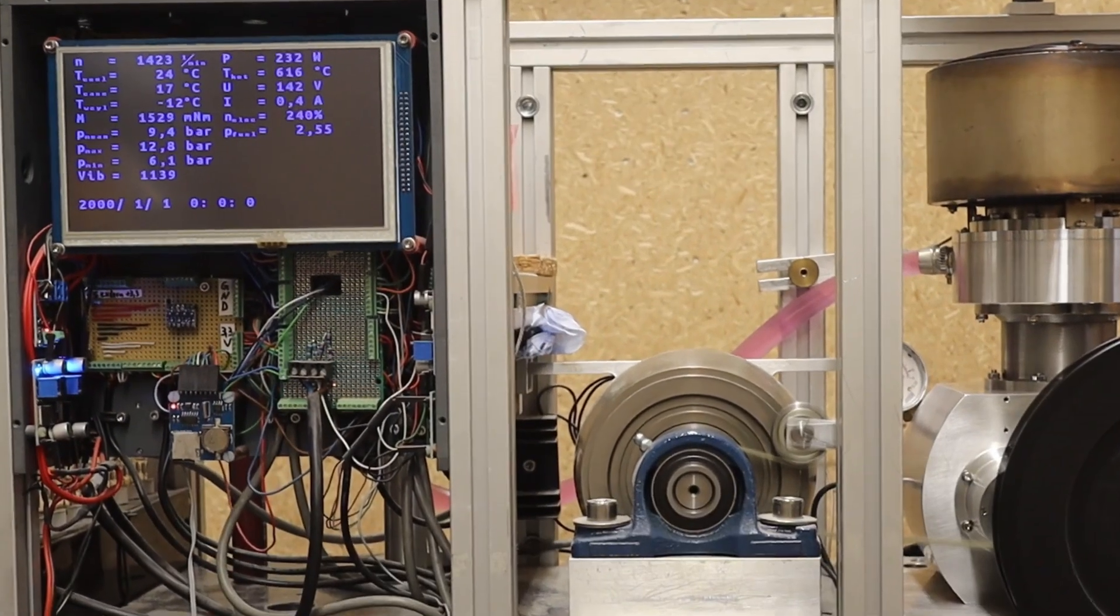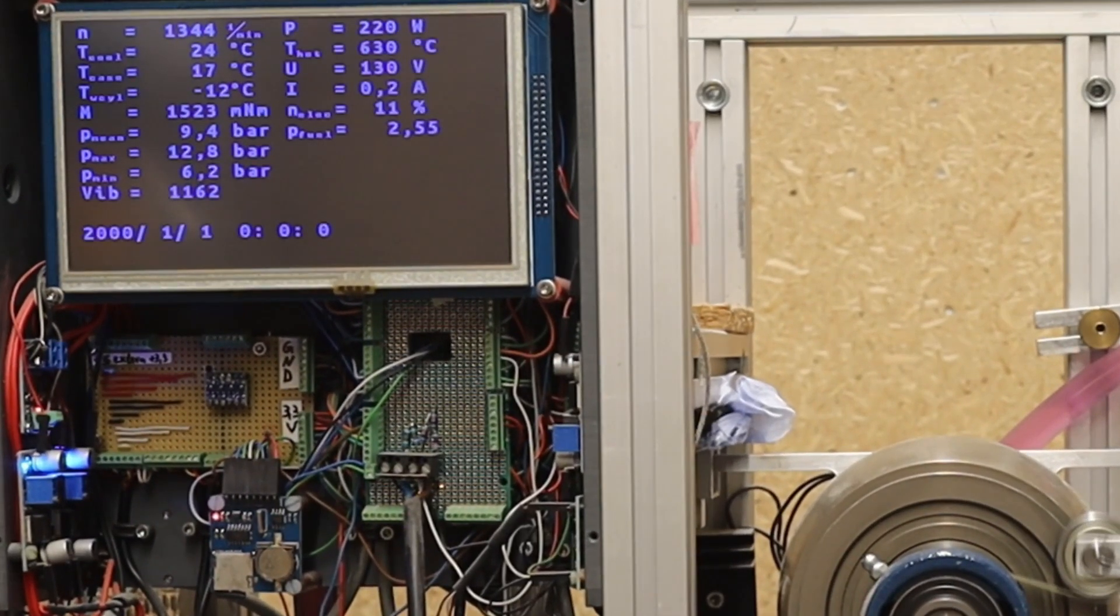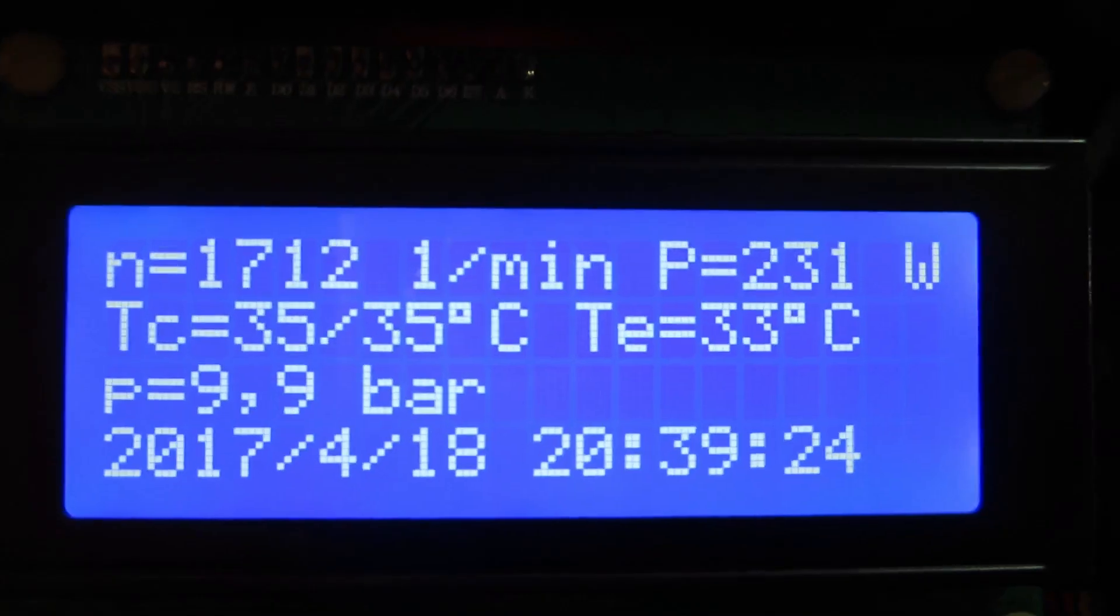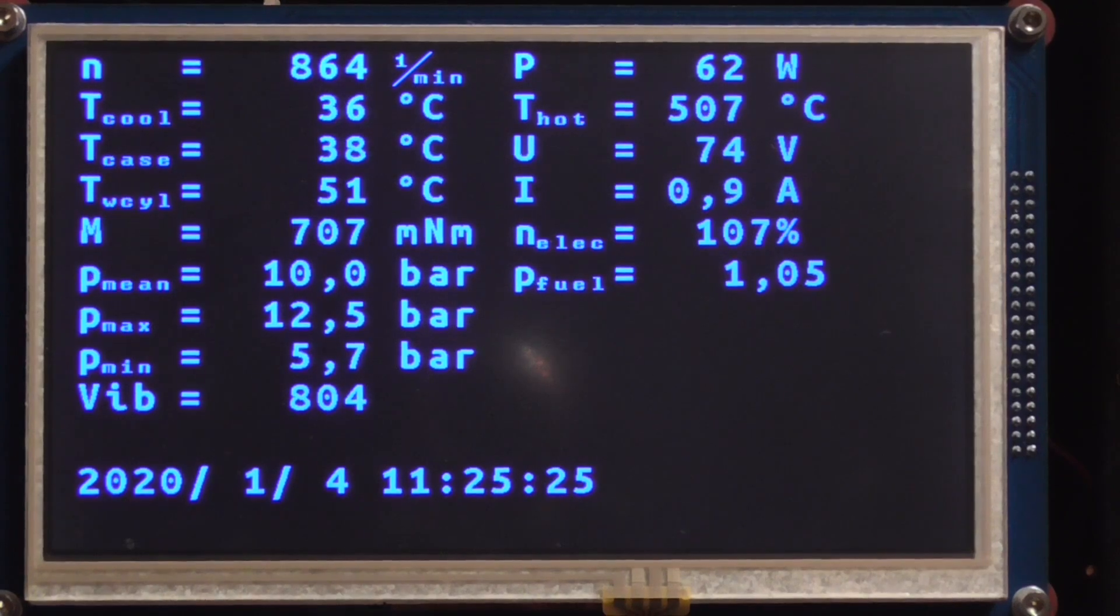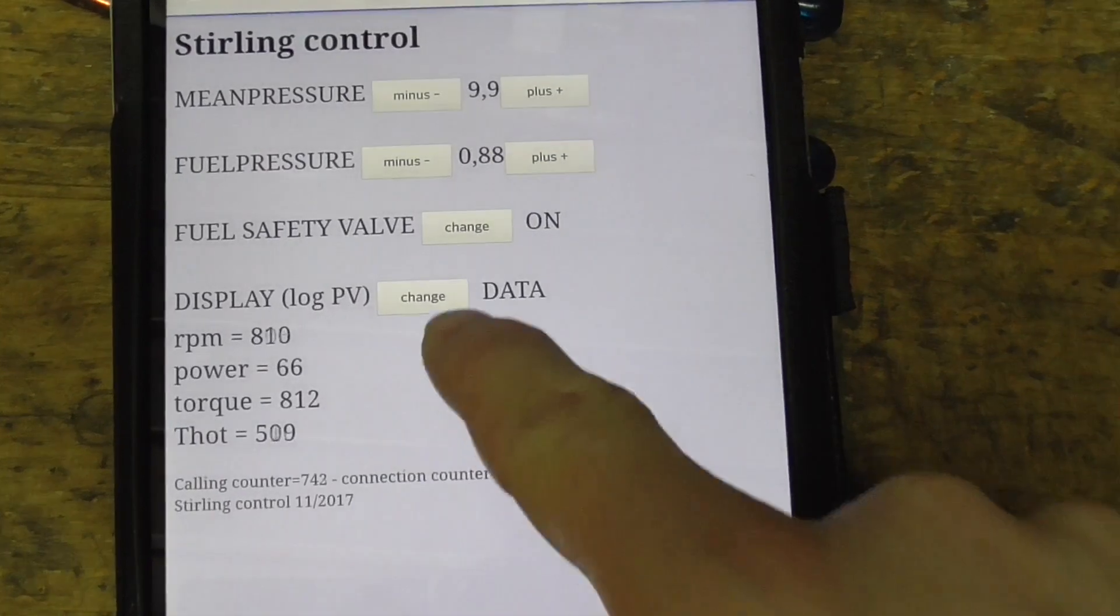A test bench is essential to know the operating conditions and to improve the performance of the engine. I have built several test stands for my various Stirling engines with many sensors and actuators, including a real-time pressure and volume diagram of the Stirling cycle and remote control over the net.